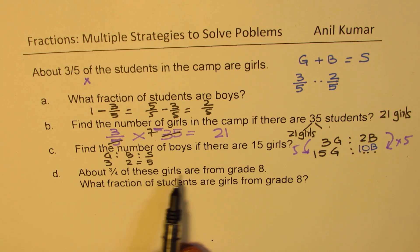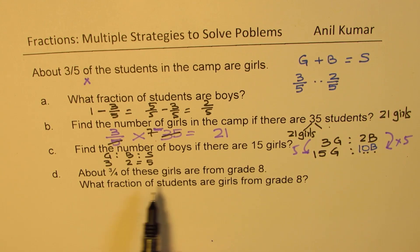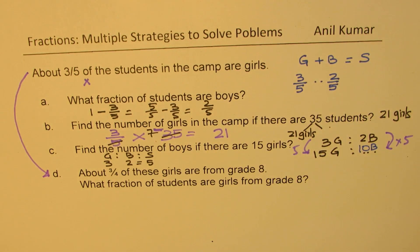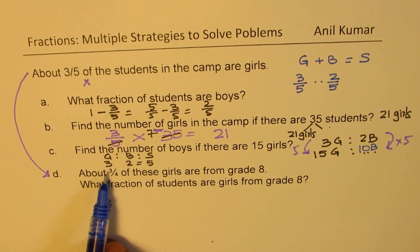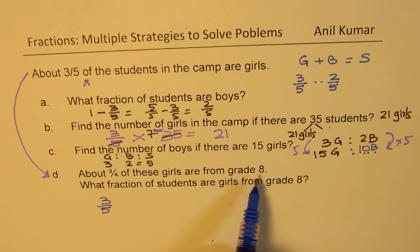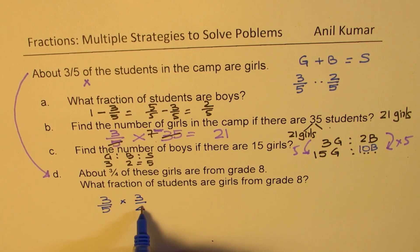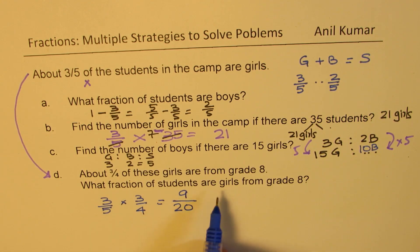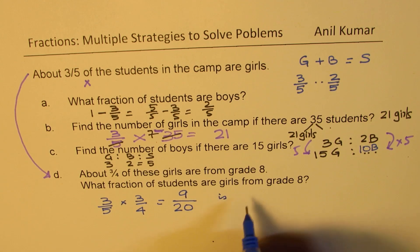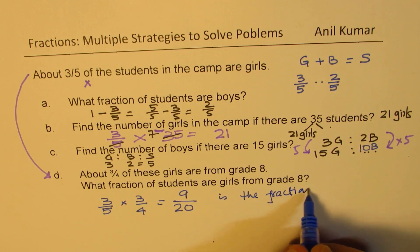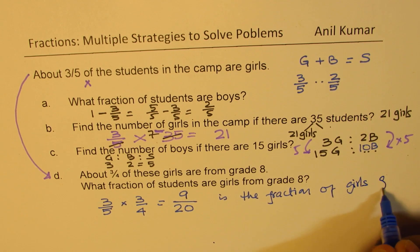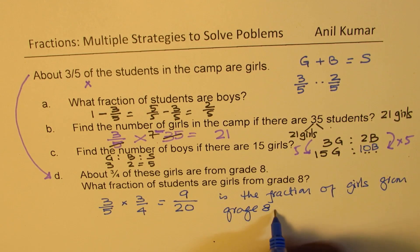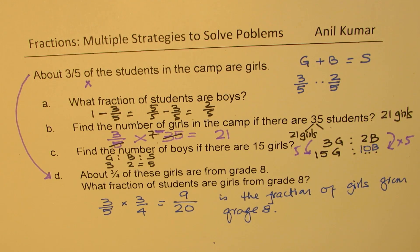Part D: About three-fourths of the girls are from grade 8. What fraction of students are girls from grade 8? This is related to what was given — three-fifths of students are girls. About three-fourths of these are from grade 8, so we multiply three-fifths by three-fourths. Three times three is nine, and five times four is twenty, giving nine over twenty as the fraction of students who are girls from grade 8.